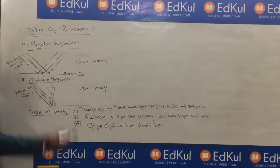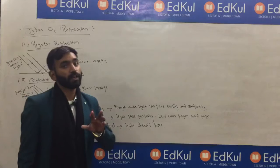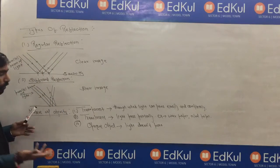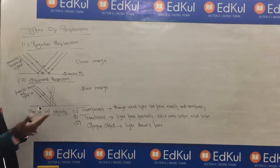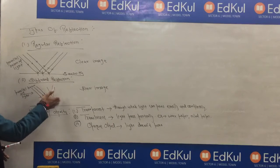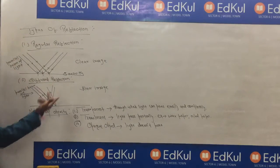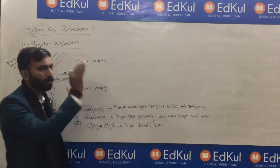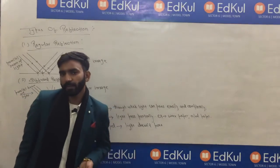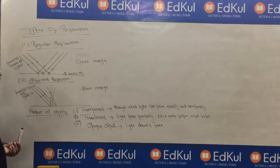The second type of reflection is diffused reflection. Diffused reflection occurs when the surface is rough. Because there are many variations in the surface, the reflected rays scatter in different directions. This is called diffused reflection, and the image formed is blur — a hazy image.